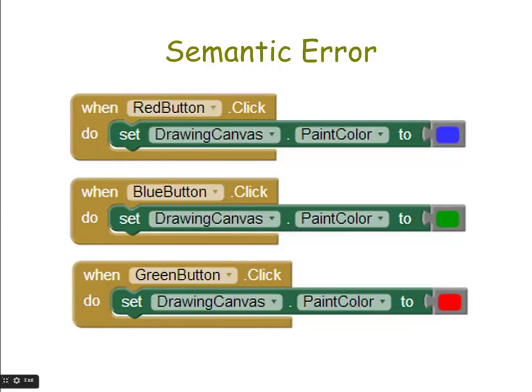Here's an example of a semantic error from the Paint Pot app. We have three buttons — red, blue, and green — and when the user clicks them, it's supposed to change the paint color on the canvas. You'd expect that clicking the red button changes the paint color to red. However, in the blocks shown, it changes the paint color to blue. Similarly, the blue button changes it to green. These are all semantic errors where the code is correct but doesn't behave as intended — when a user clicks the red button, they get blue lines instead of red ones.